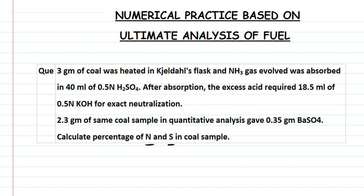Let's see what values are given to us. 3 grams of coal was heated in a Zeldol flask and the ammonia gas evolved was absorbed in 40 mL of 0.5N sulfuric acid. So we are given: weight of coal, total volume of acid, normality of acid. Then the excess acid required 18.5 mL of 0.5N KOH — that is the alkali solution whose normality and volume are given — for exact neutralization.